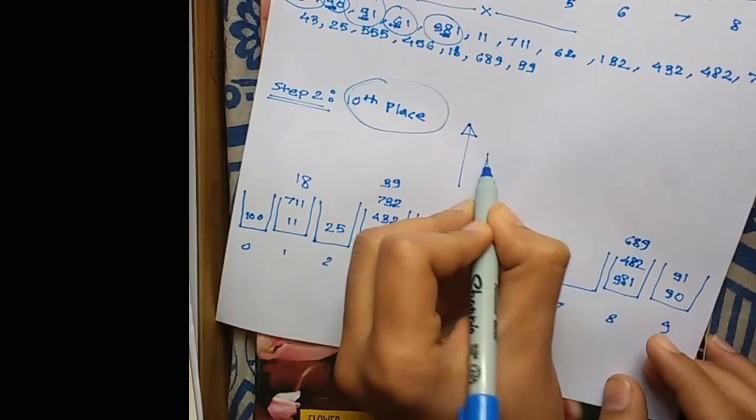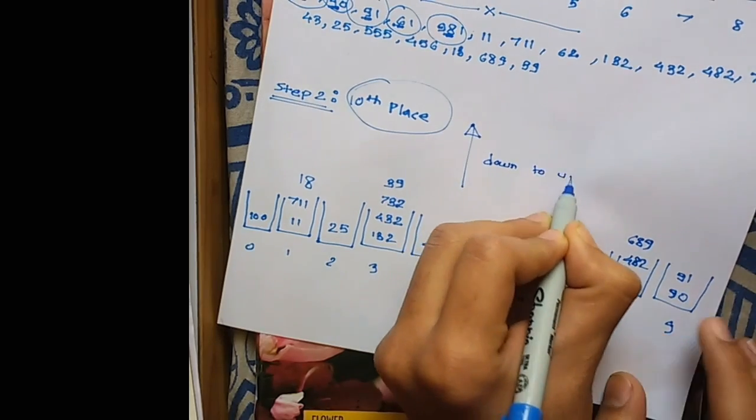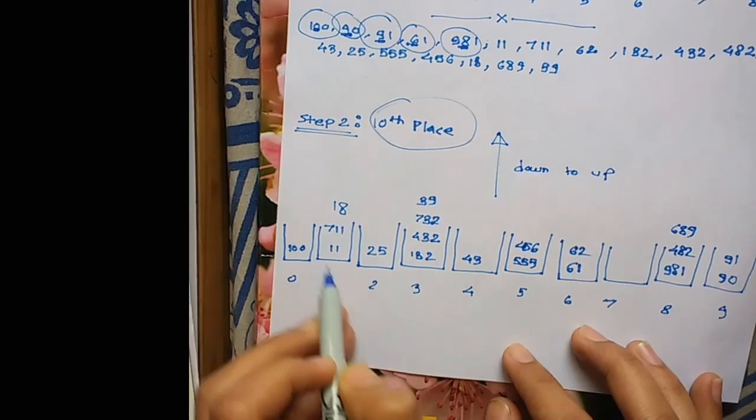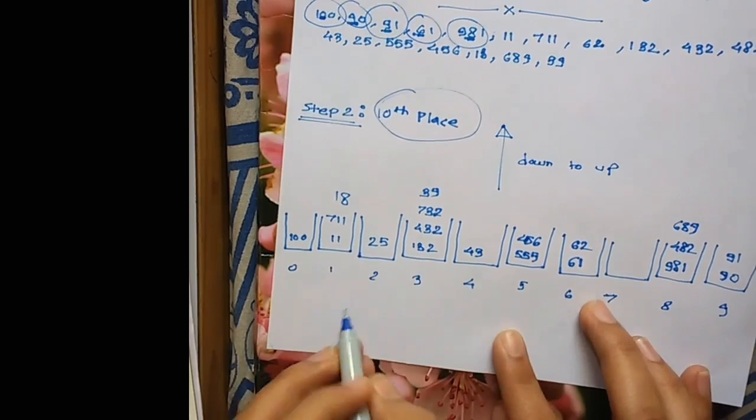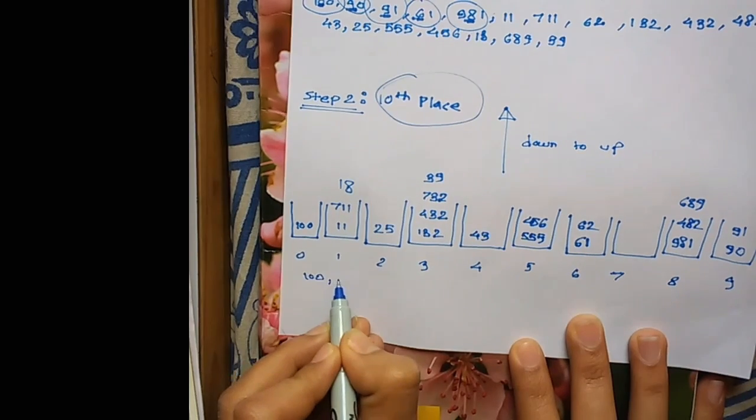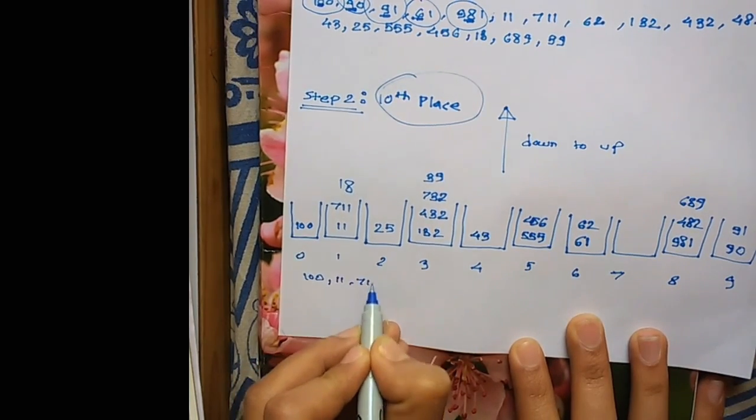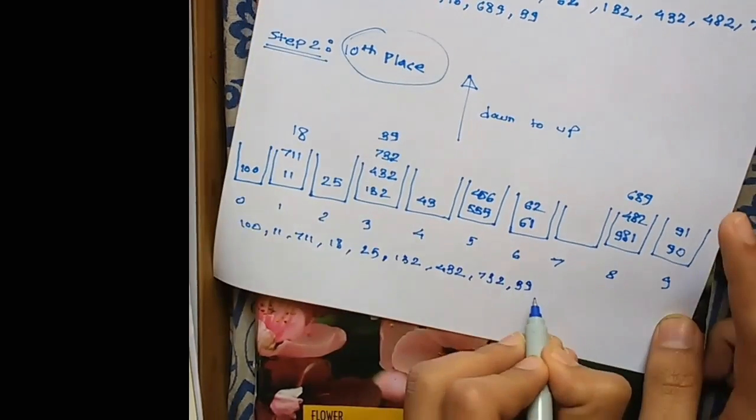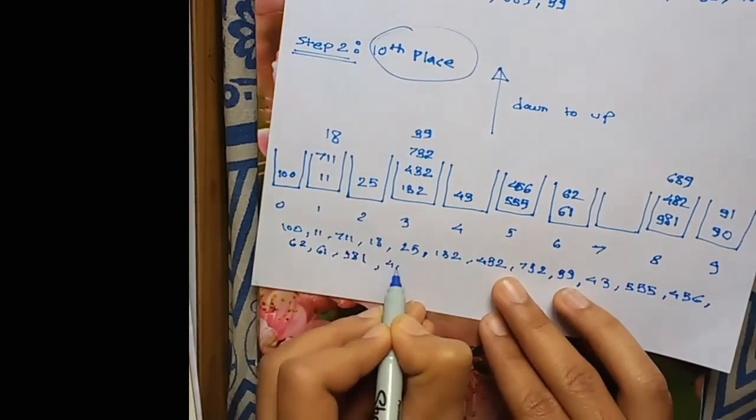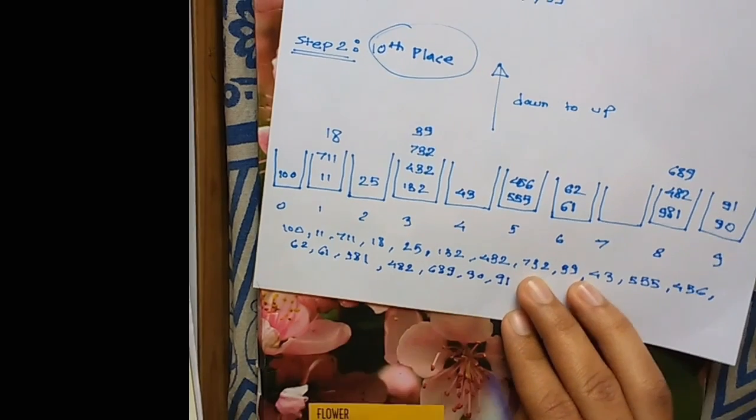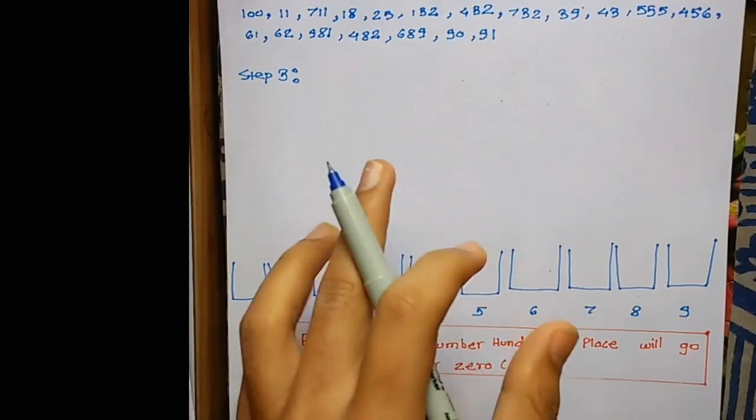Now we have to again go from down to up while sorting them in list format. First comes 100, then 11, 711, and so on. This is how you solve step 2. Now let's go to step 3.